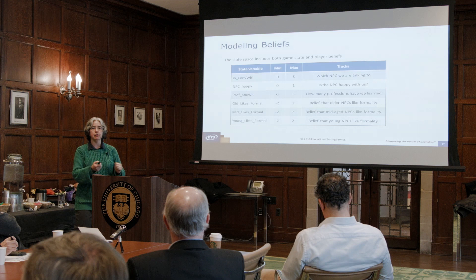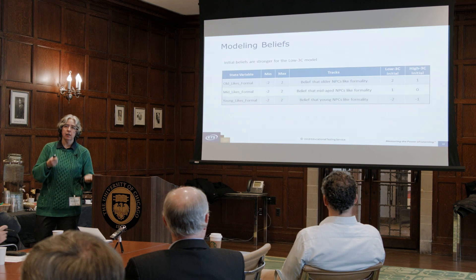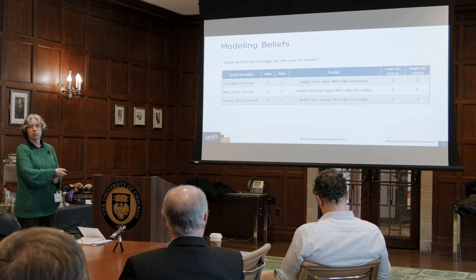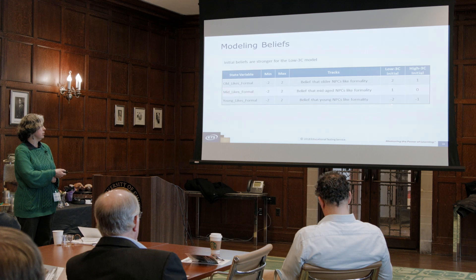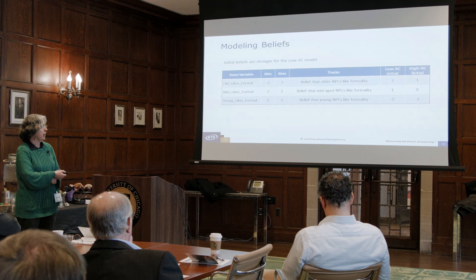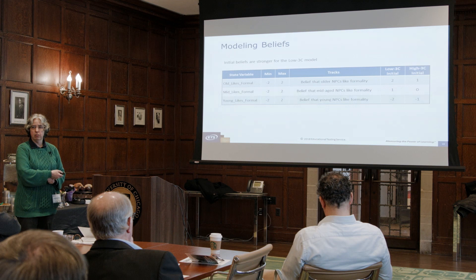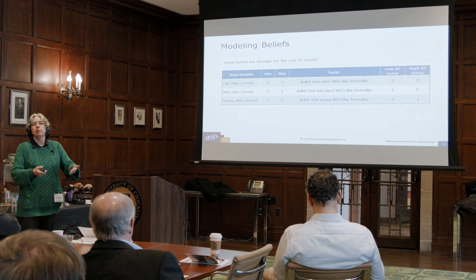The low 3C models start with strong traditional Westernized beliefs: old people like to be treated formally, young people don't, and middle-aged people are probably best treated formally. The high 3C, when I said they were more open-minded — this is what I mean: they have some idea of what people want, but they're not strongly in any one camp.